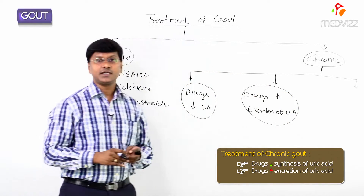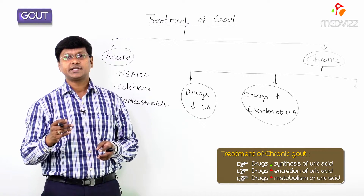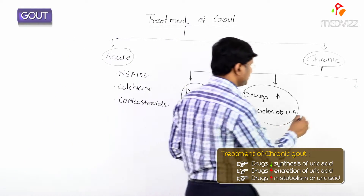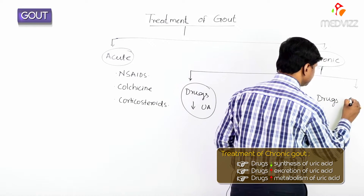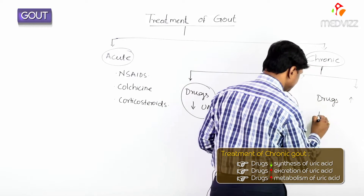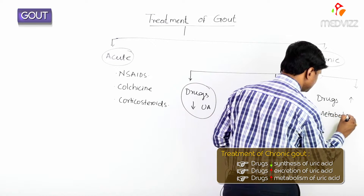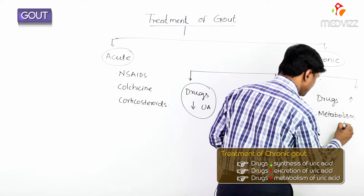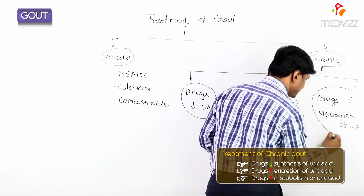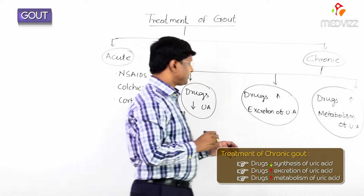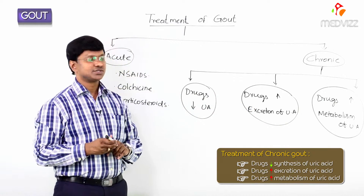The third group of drugs for chronic gout is drugs increasing the metabolism of the uric acid.